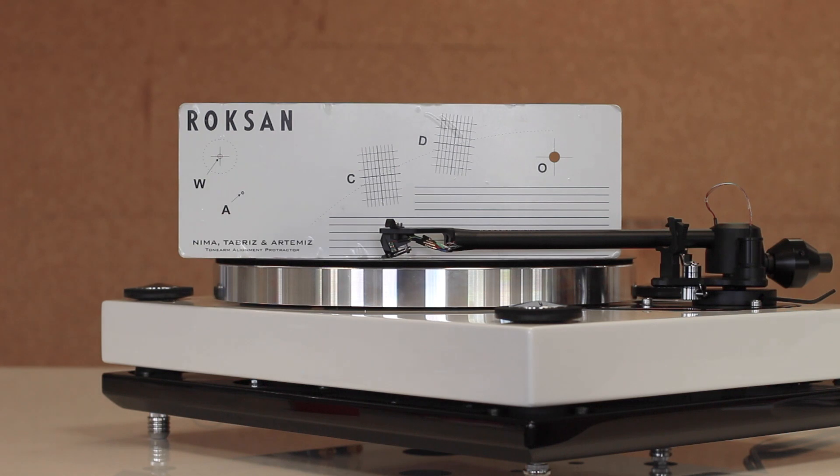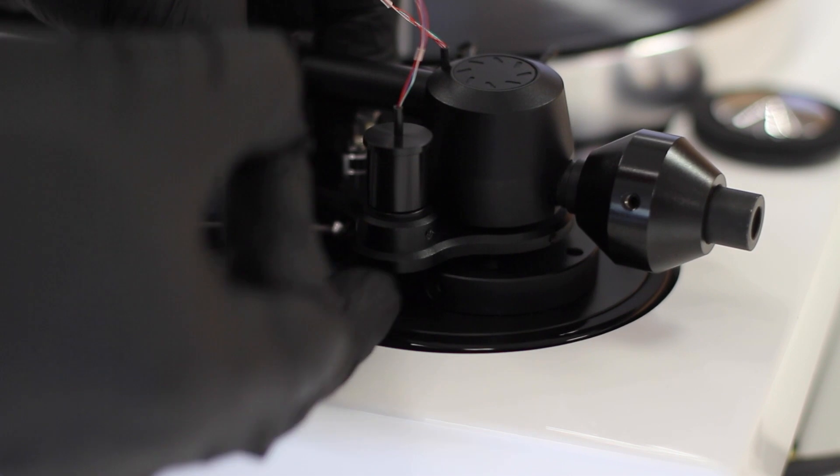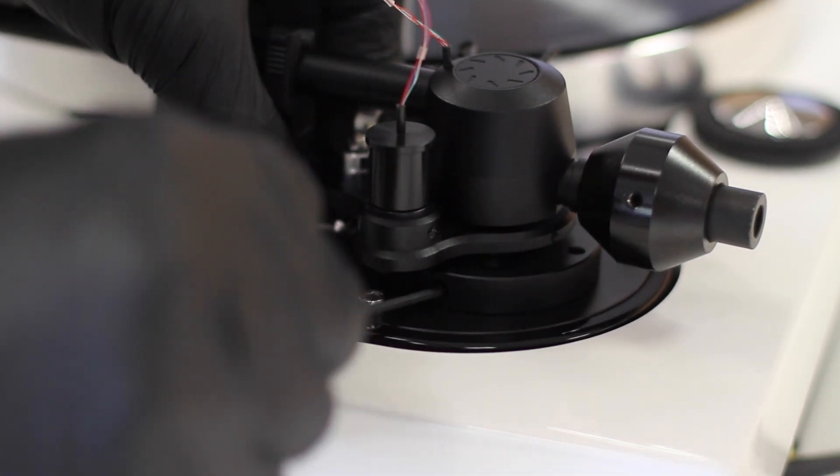Using the tonearm's alignment protractor, make sure the tonearm is parallel with the protractor. If this isn't correct, adjust the height according to your tonearm's instructions.